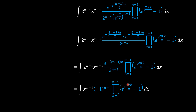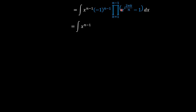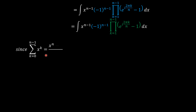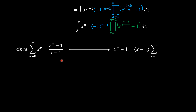Our problem now is to evaluate the product that remains under the product sign. We isolate the product part and use the geometric progression identity: the sum from k equals 0 to n minus 1 of x^k equals (x^n − 1)/(x − 1), which means x^n − 1 equals (x − 1) times the summation from k equals 0 to n minus 1 of x^k. Multiplying across by x minus 1 confirms this.